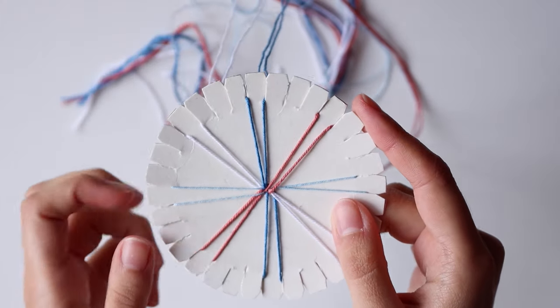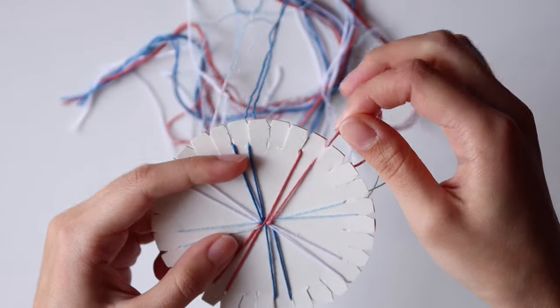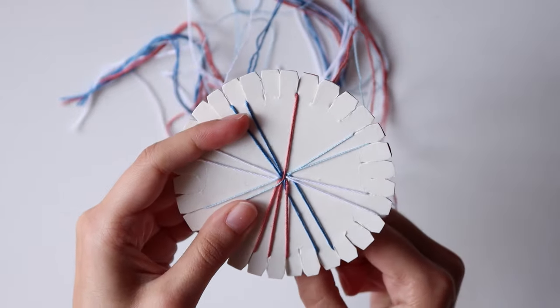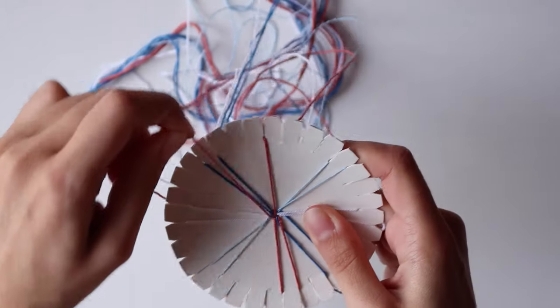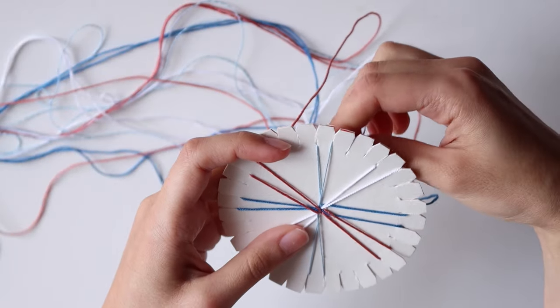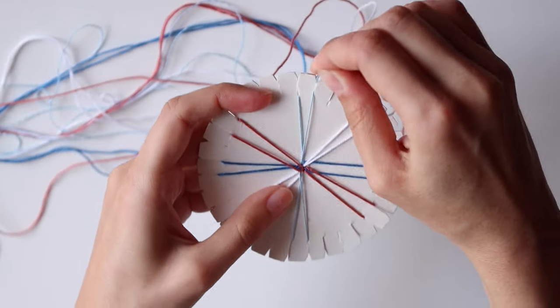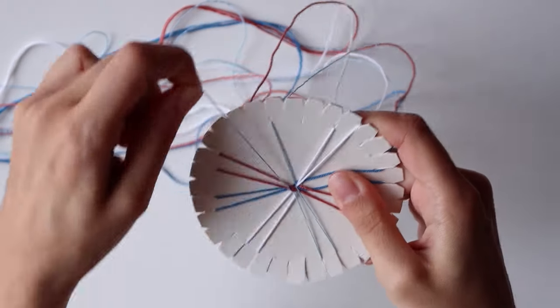Now let's start braiding. Place the top right string in the right bottom hole, like this, and the left bottom string in the same color into the left top hole. Rotate the wheel so the next color, in this case the blue one, is upwards and repeat the same thing. Right cord down, left cord up and so on.